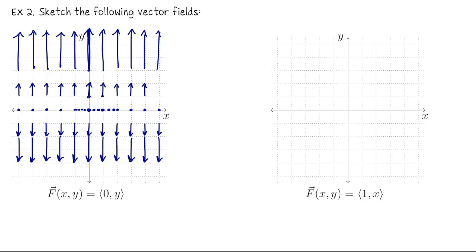Let's look at the vector field f(x,y) = (1, x). Starting with the origin: f(0,0) = (1,0). Along the y-axis, the x-coordinate is always 0, so we attach the vector (1,0). At the point (1,-1), the x-coordinate is 1, so we attach the vector (1,1) — one unit east, one unit north. Every coordinate with x = 1 gets the same vector shape. At (-1,0), the vector is (1,-1): 1 unit east, 1 unit south.